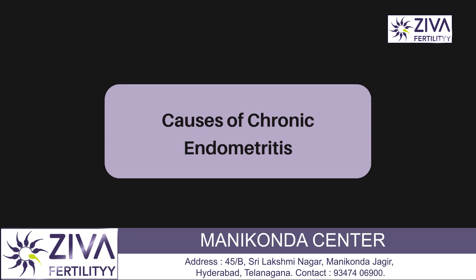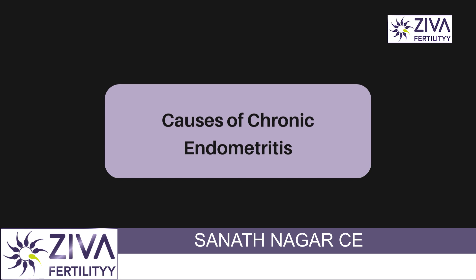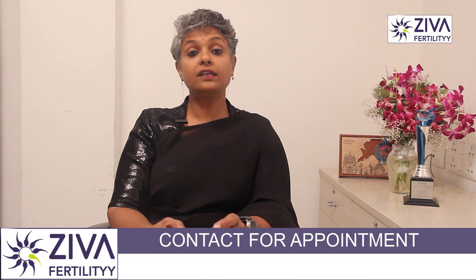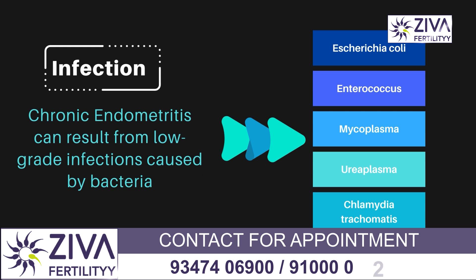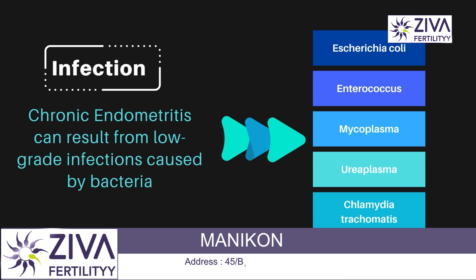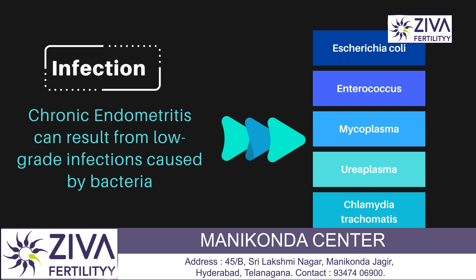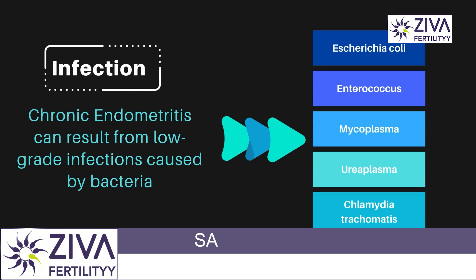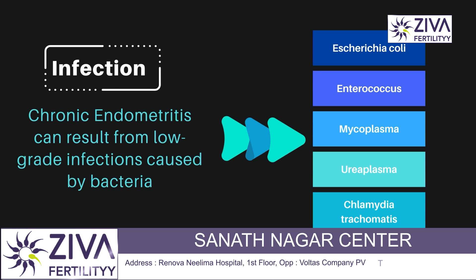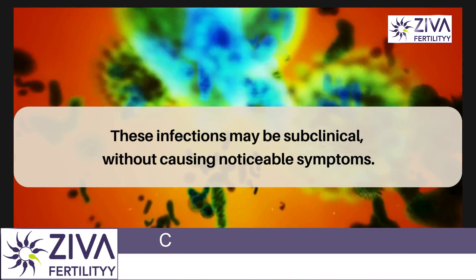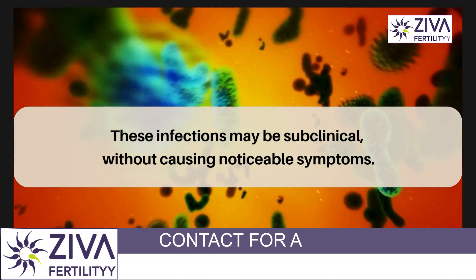Let's look at the causes of chronic endometritis. The exact etiology of chronic endometritis is not always clear, but several potential causes have been identified. One cause is infection — chronic endometritis can result from low-grade infections caused by bacteria including E. coli, Enterococcus, Mycoplasma, Ureaplasma, and Chlamydia trachomatis. These infections may be subclinical, without causing noticeable symptoms.